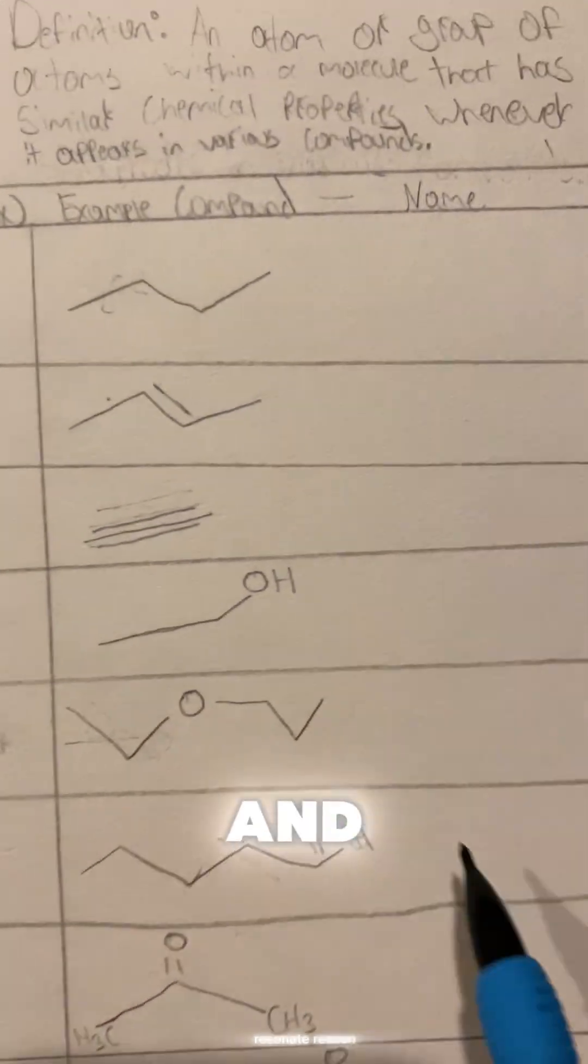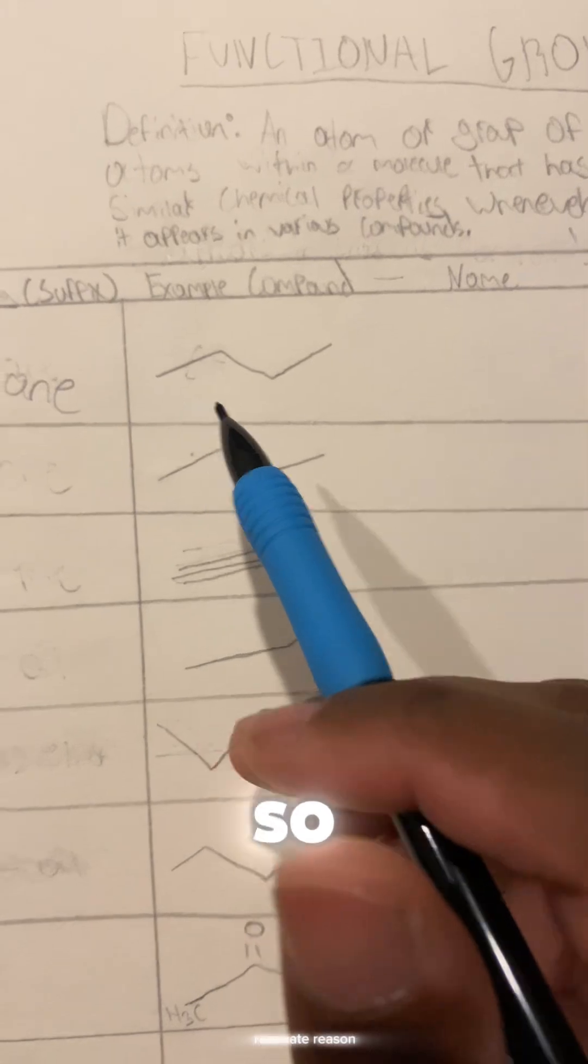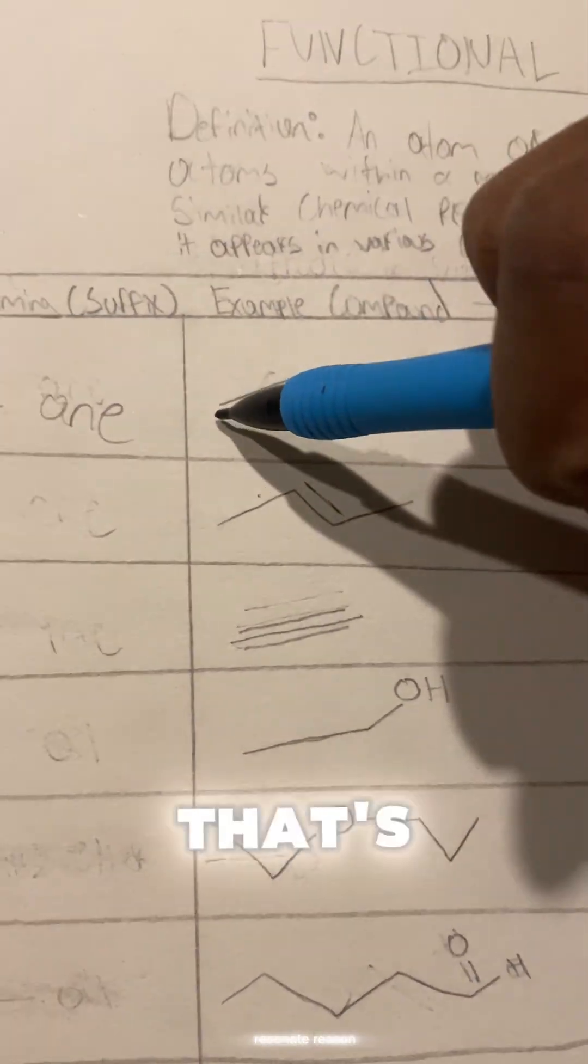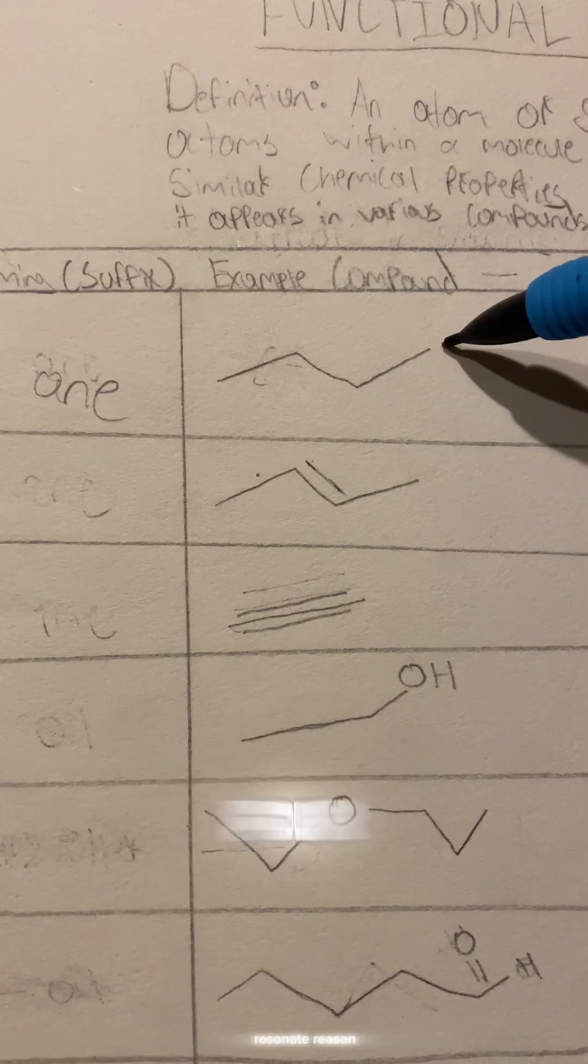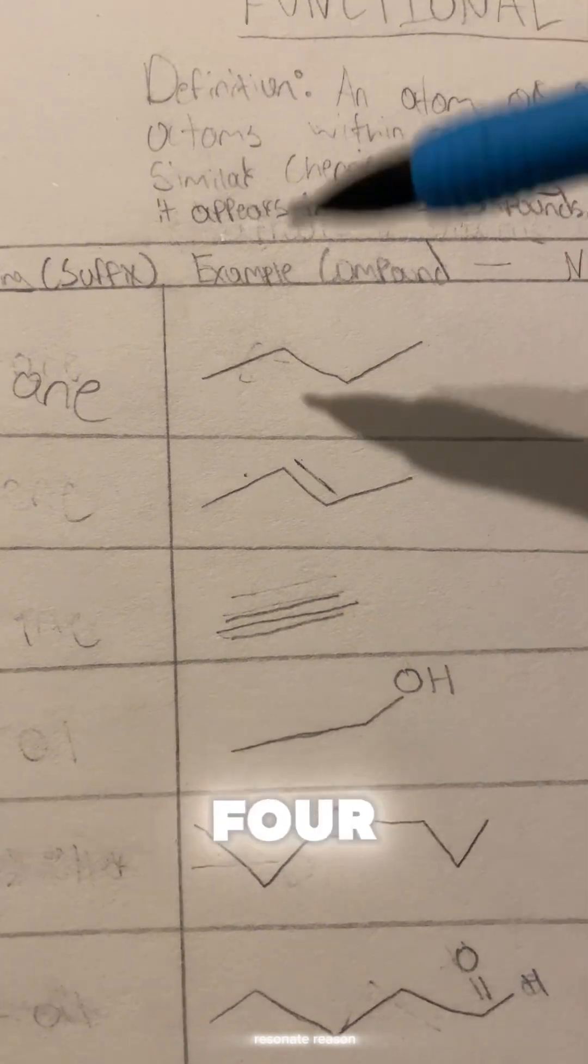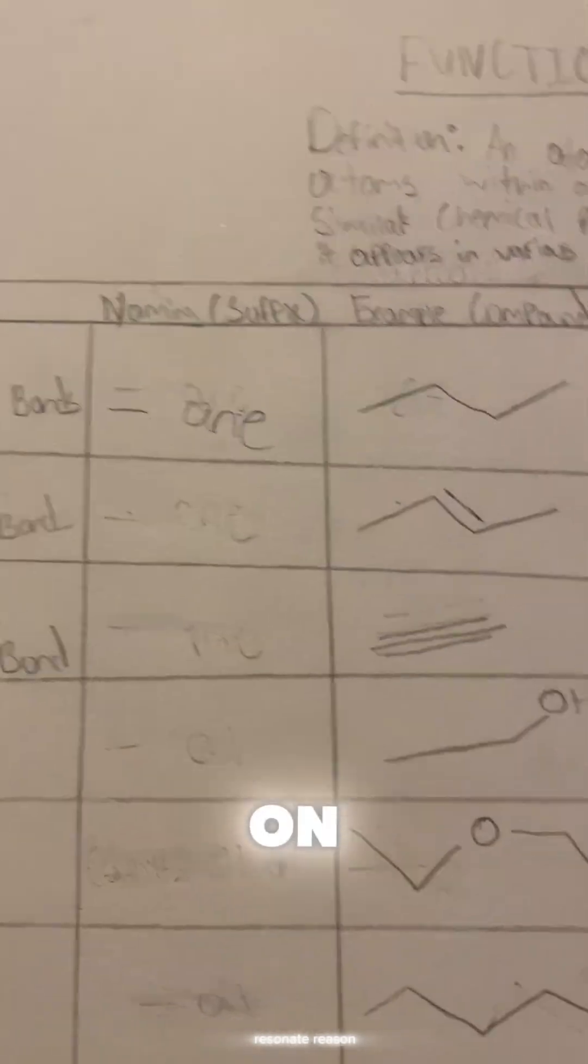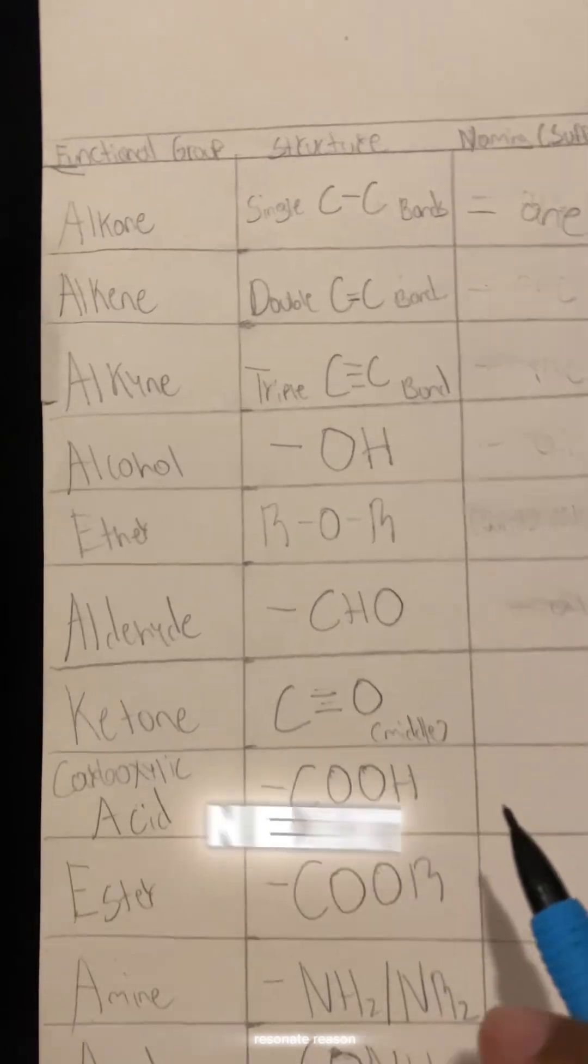First we're going to use the same strategy. We're just going to count the carbons: one, two, three, four. I know our prefix for four is going to be 'but', so we're going to write 'but' and then we're going to add the suffix on, which is just 'ane'. So our answer: butane. Let's move on to the next one.